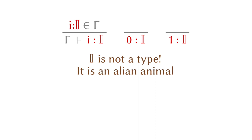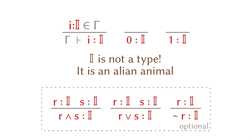One thing I want to bring up here is that this interval I is not a type, even though it's written as a type in all the above rules. It's not even a different kind of animal in the zoo — it's an animal from outer space. It's completely different. So don't be fooled by the syntax.